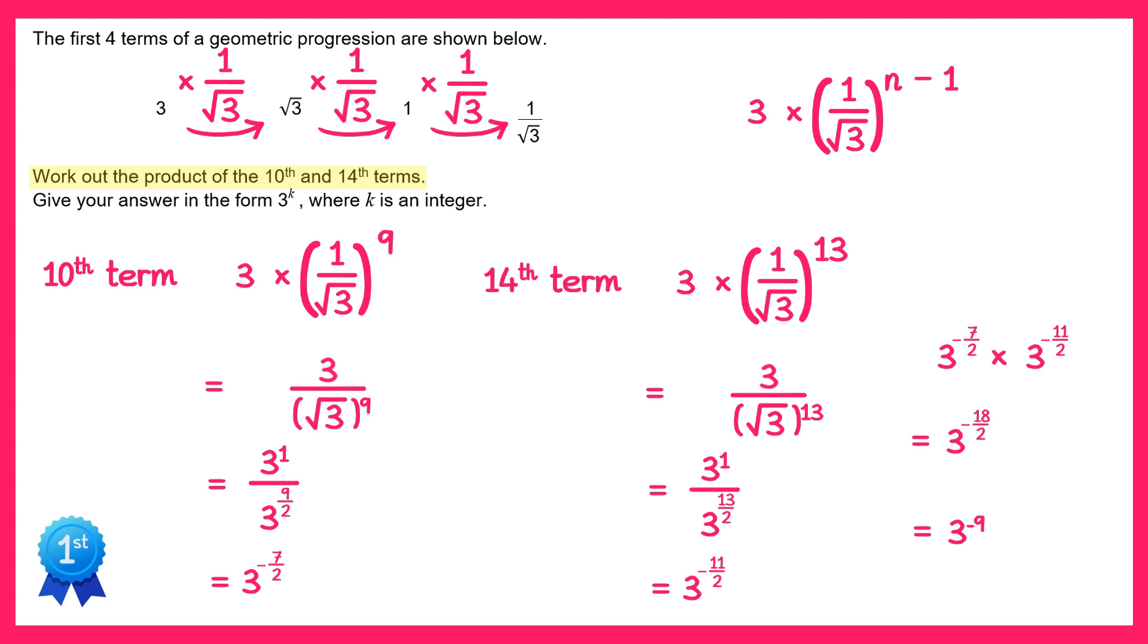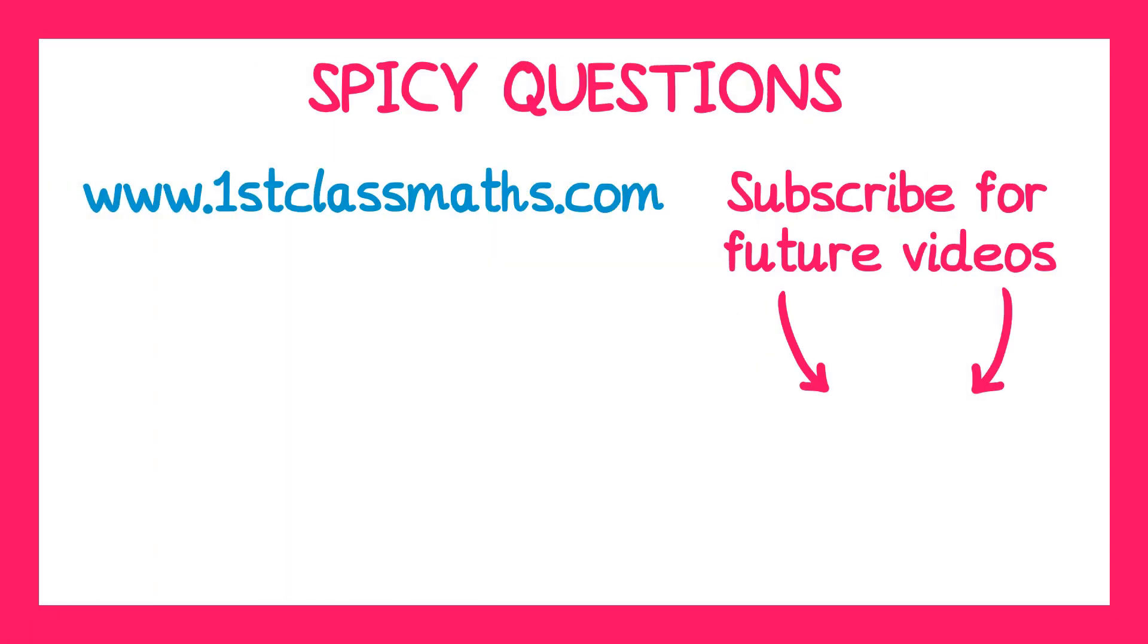We've now answered the question because it asked us to give this in the form 3 to the k where k is an integer and negative 9 is an integer. Thank you for watching this video I hope you found it useful. Check out the one I think you should watch next and subscribe so you don't miss out on future videos.